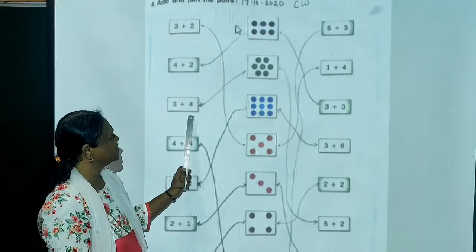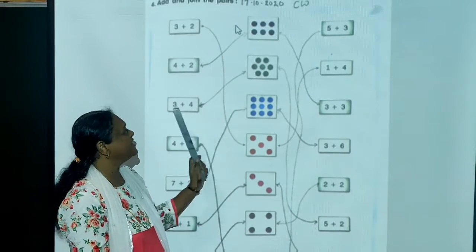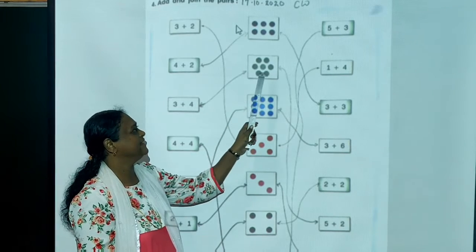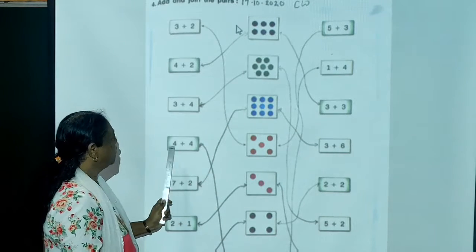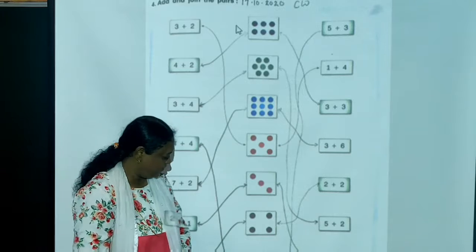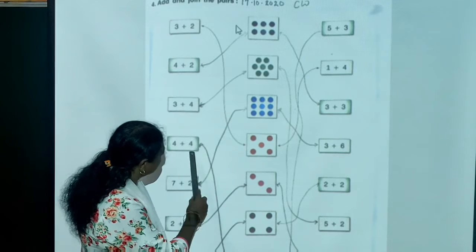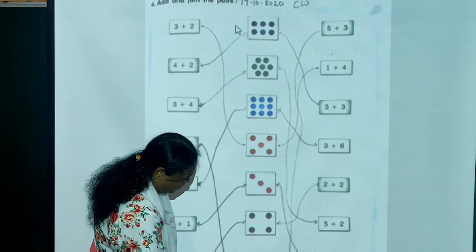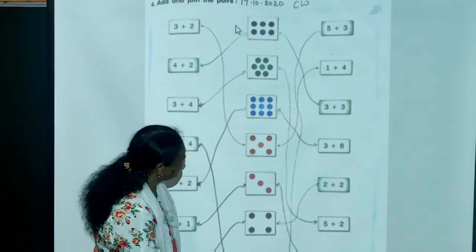Now again, 3 plus 4. So 3 plus 4 is 7. Count 1, 2, 3, 4, 5, 6 and 7. 4 plus 4 equals 8. Now, 8 is here. So match from here till here, counting 1, 2, 3, 4, 5, 6, 7, 8.